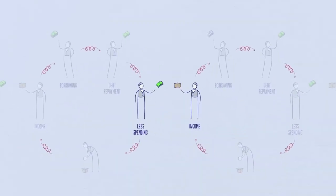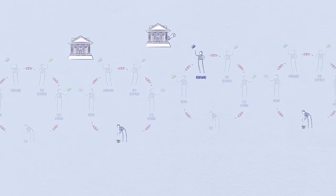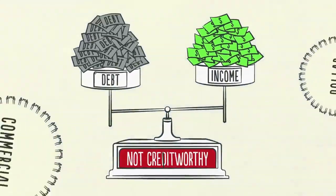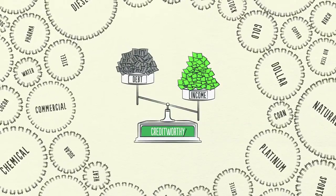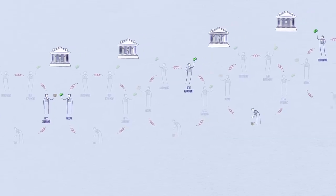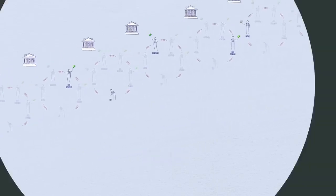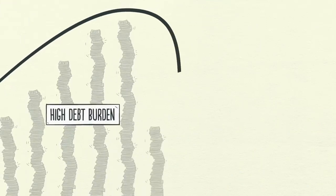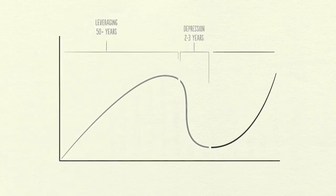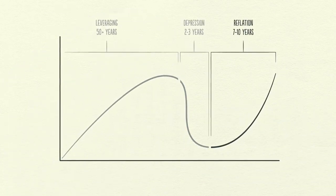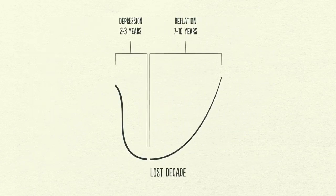When incomes begin to rise, borrowers begin to appear more creditworthy. And when borrowers appear more creditworthy, lenders begin to lend money again. Debt burdens finally begin to fall. Able to borrow money, people can spend more. Eventually, the economy begins to grow again, leading to the reflation phase of the long-term debt cycle. Though the deleveraging process can be horrible if handled badly, if handled well, it will eventually fix the problem. It takes roughly a decade or more for debt burdens to fall and economic activity to get back to normal, hence the term lost decade.